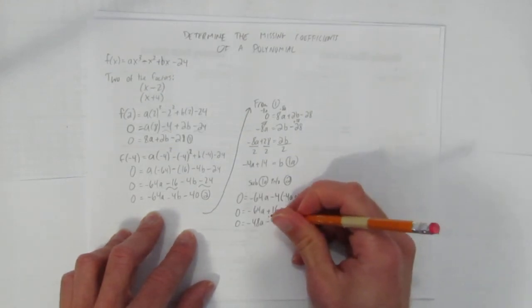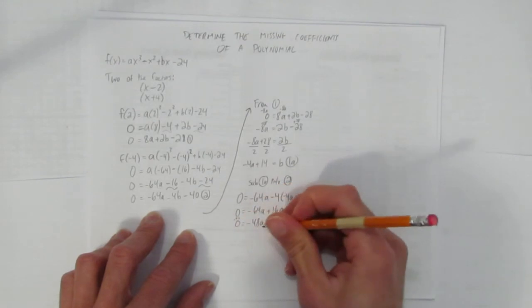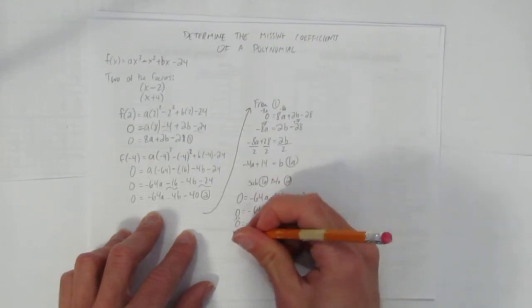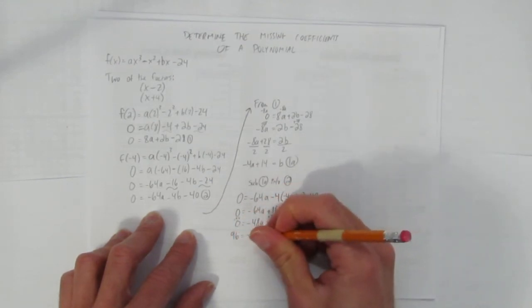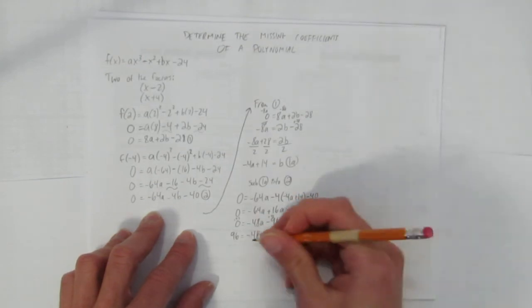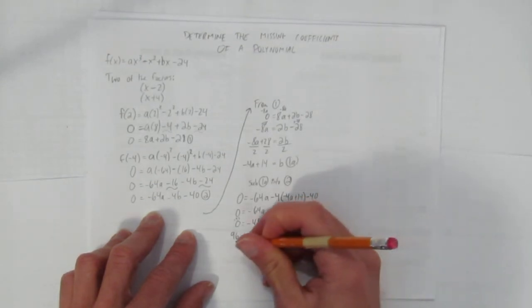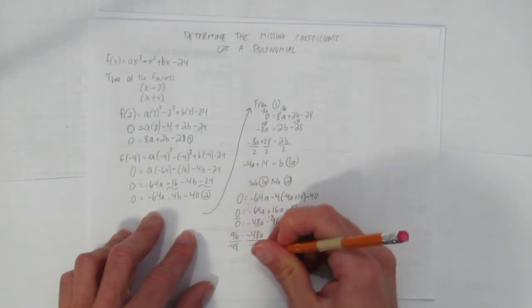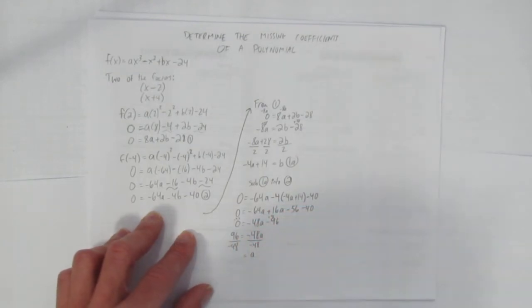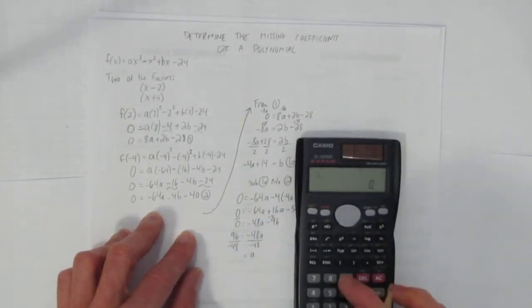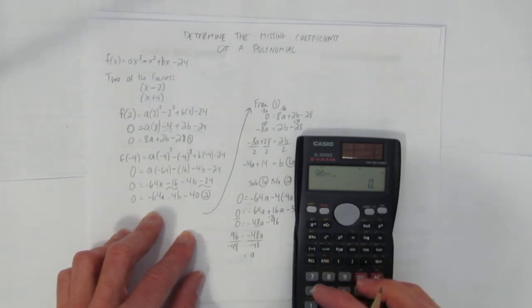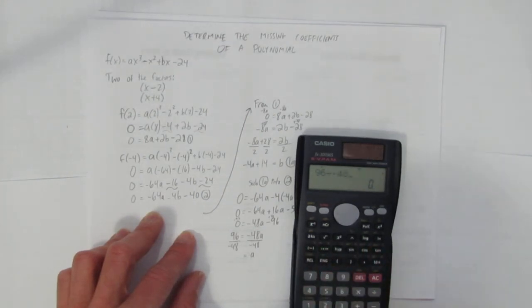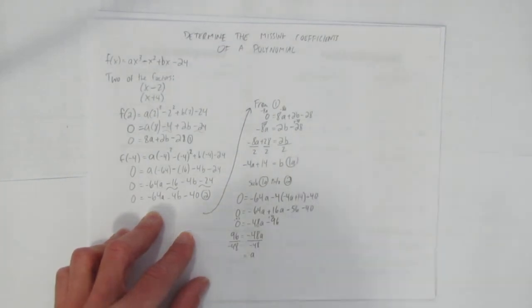So I'm going to add 96 both sides so I can get a by itself. And I have 96 equals negative 48a. And now divide both sides by negative 48. I can see the answer, but if you can't, it's OK. Pull out the calculator. What's 96 divided by negative 48? You get negative 2.